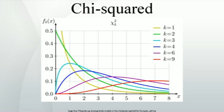Definition. If z₁, …, zₖ are independent standard normal random variables, then the sum of their squares is distributed according to the chi-squared distribution with k degrees of freedom. This is usually denoted as χ²(k). The chi-squared distribution has one parameter, k, a positive integer that specifies the number of degrees of freedom.